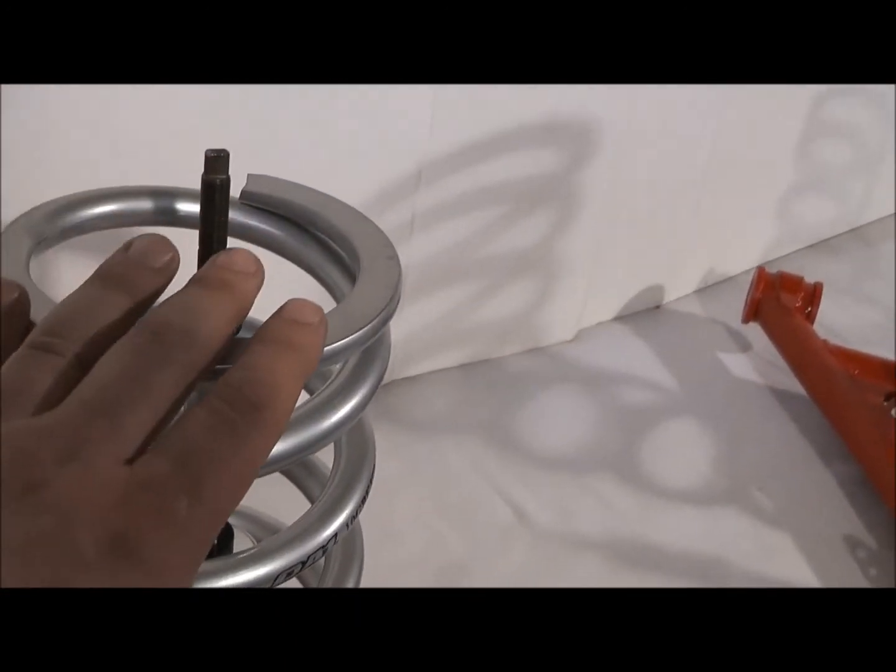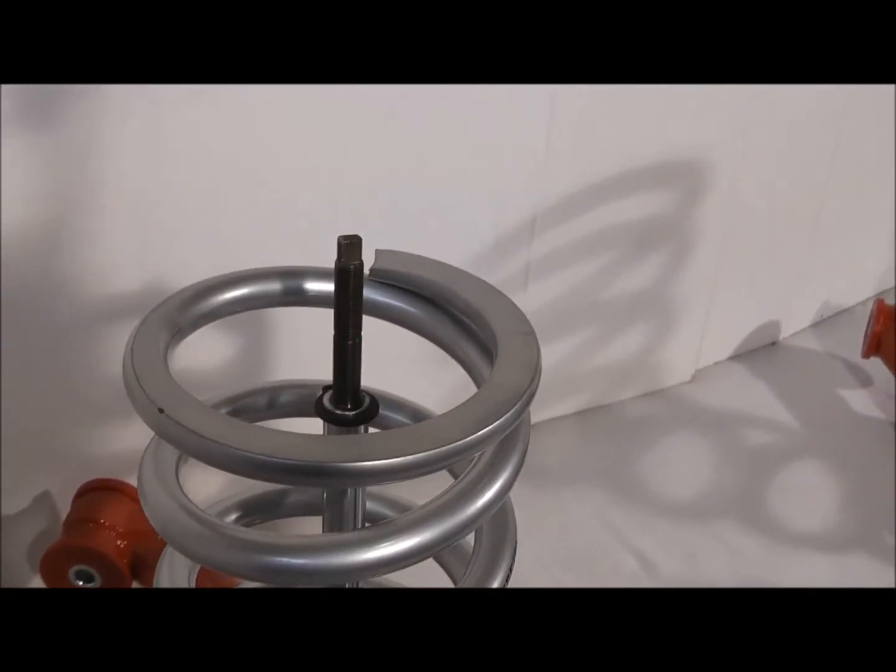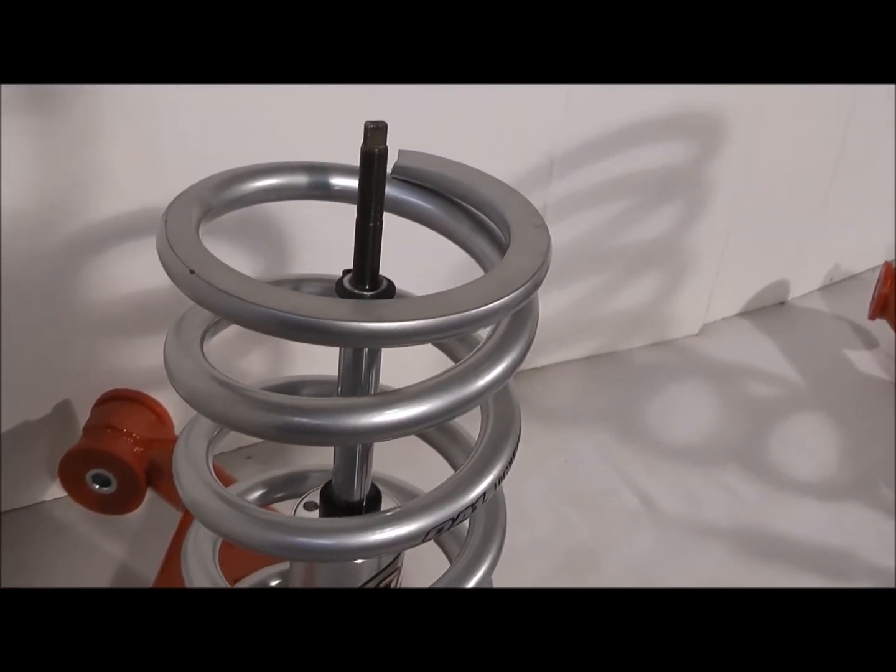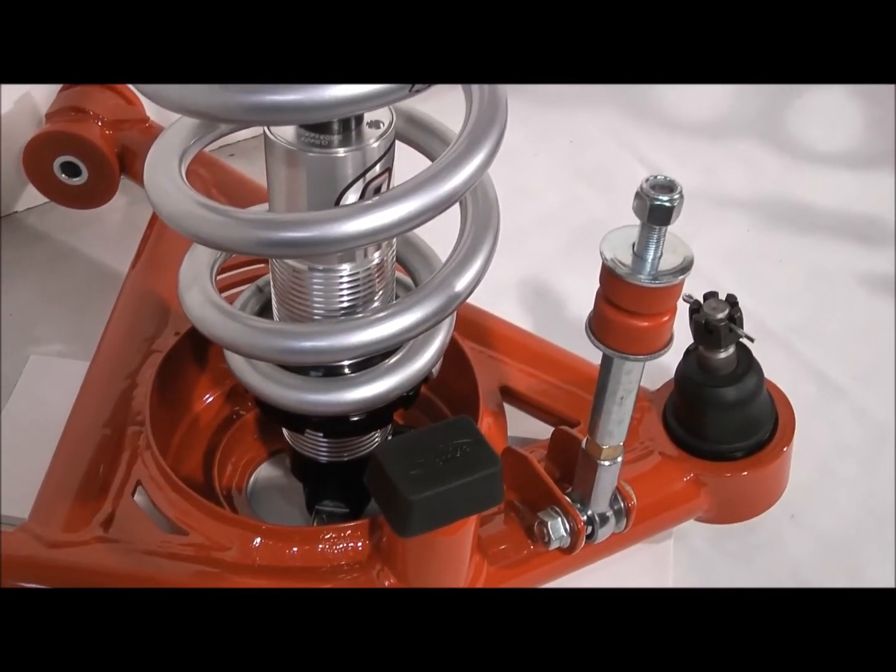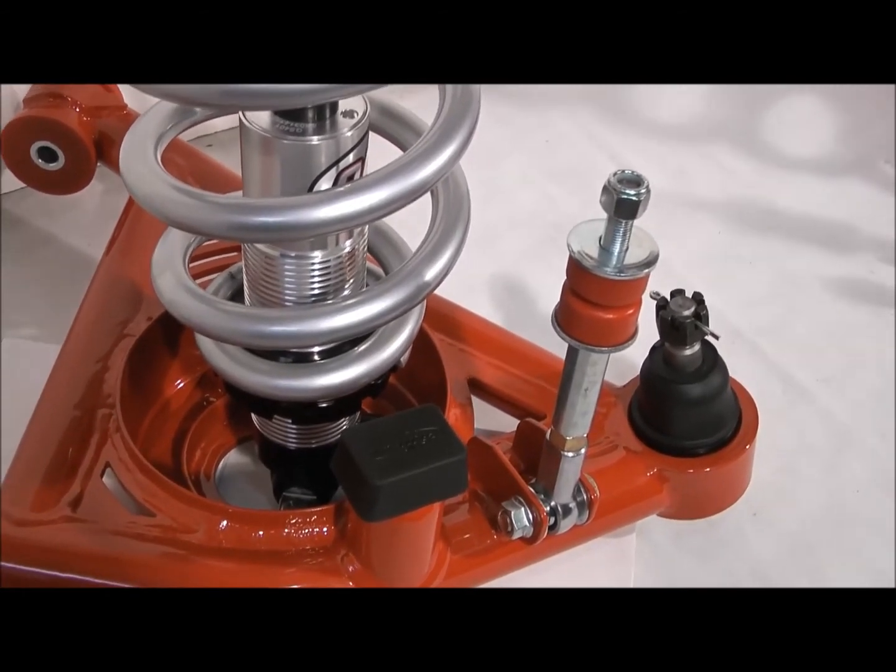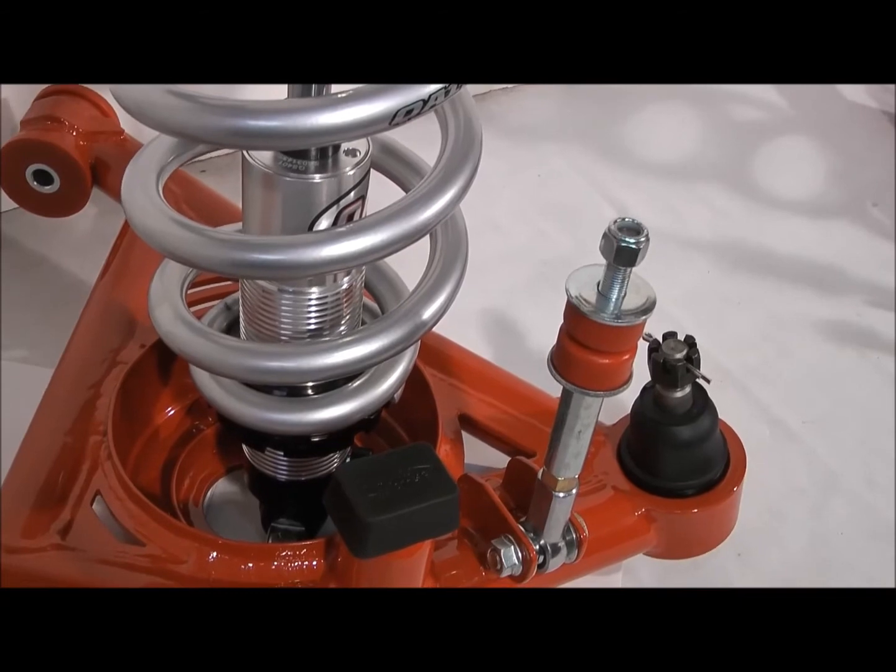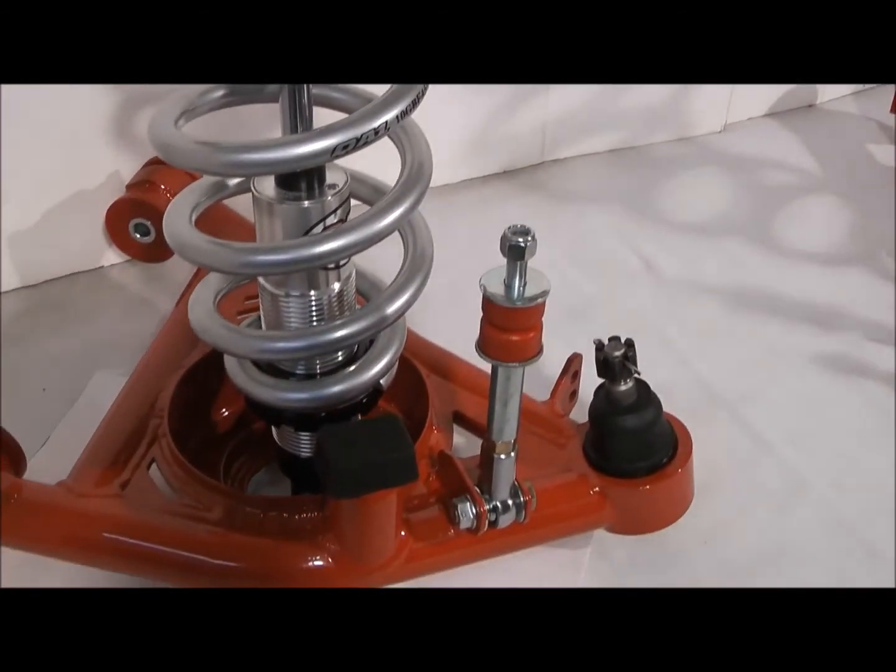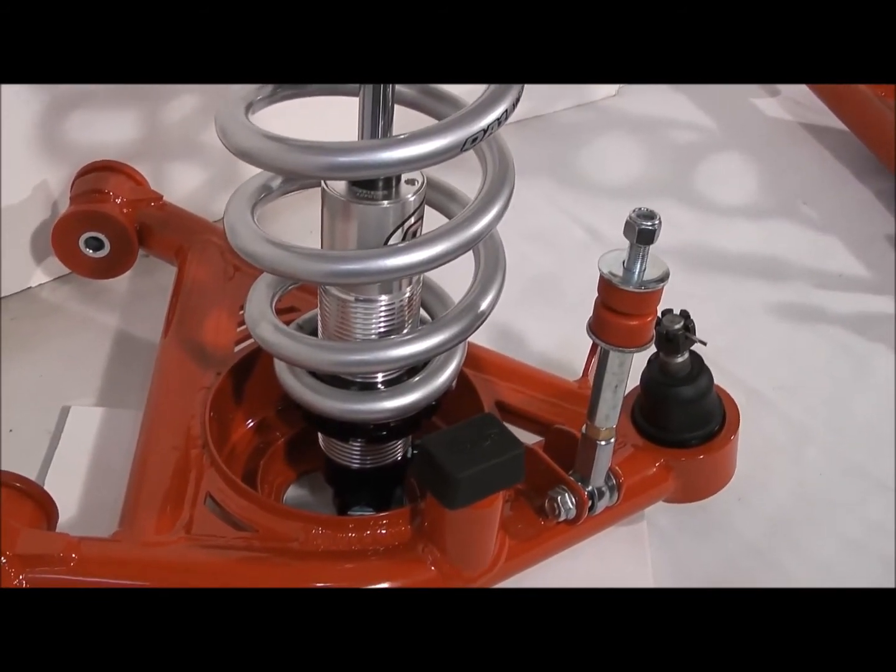And then the top of the spring is made to mount into the factory upper spring mount on the frame. So that's a nice setup too because your ride height is adjustable. Shocks are 18-way adjustable. You can get single adjustable, you can get double adjustable where you can do your compression and rebound independently, and they also have an R-series where you're only adjusting the rebound for drag racing.